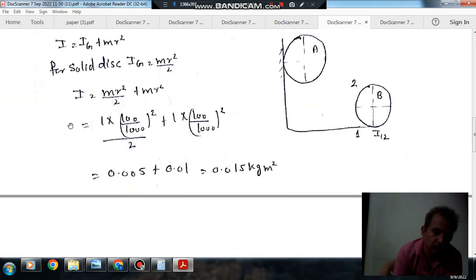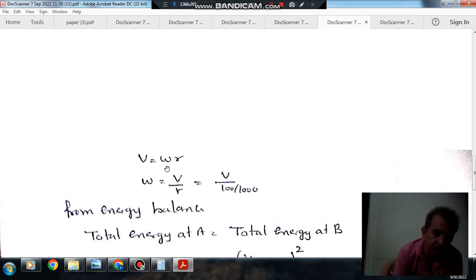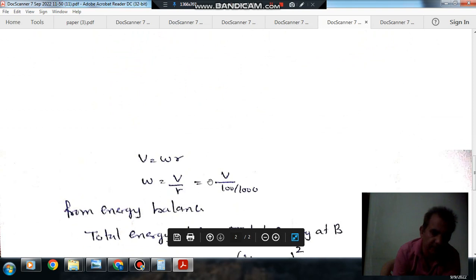So this is your I. And omega is, we know that omega equals V by R. This is velocity of the disk. And R is radius, and radius is here 100 by 1000. Okay.